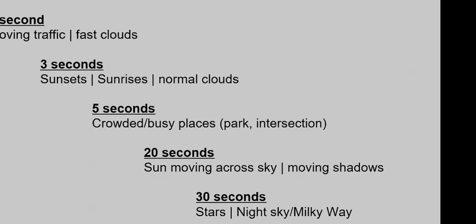For interval timing, here are some suggestions. One-second intervals work for moving traffic or fast clouds. Three-second intervals are useful for sunsets, sunrises, or normal-speed clouds. Five-second intervals are good for crowded or busy places like a park or downtown intersection. Twenty-second intervals are good for the sun moving across the sky or capturing a shadow moving across the ground. Thirty-second intervals are good for stars or other night sky subjects like the Milky Way. These aren't perfect — there are many factors — but they serve as a good starting point.